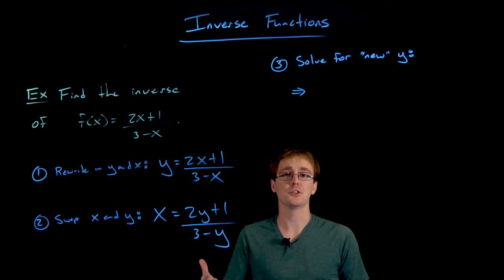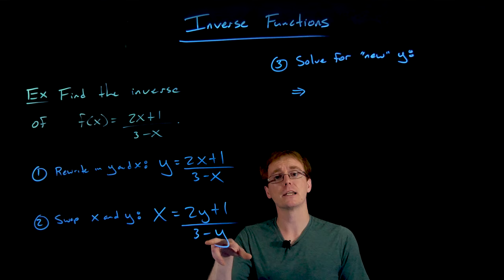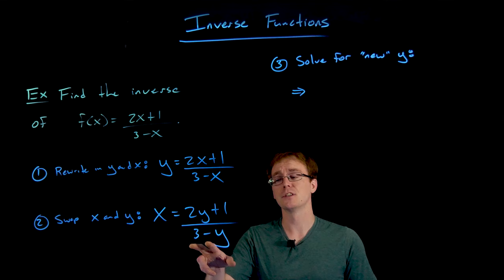So one of the big issues that is making it difficult for us to solve for y at the moment is we have a y in the numerator as well as a y down in the denominator. So we're going to clear our fractions by multiplying both sides by this denominator, which is that quantity 3 minus y.